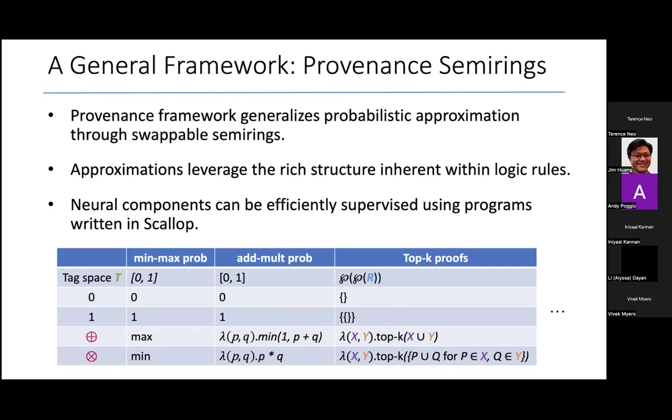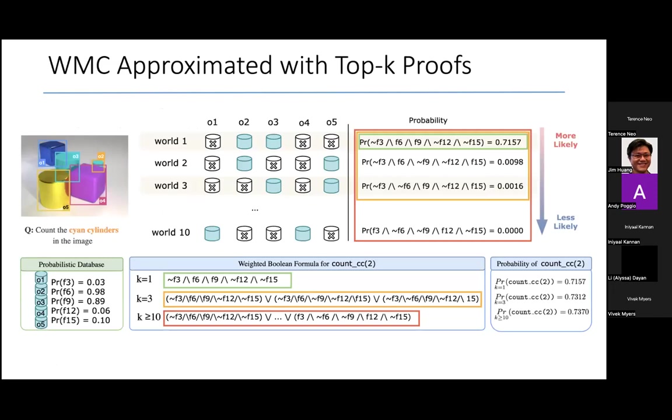Top-k, on the other hand, gives you a tunable parameter k, which lets you keep only the highest probability k proofs. Let me explain this with an example here.